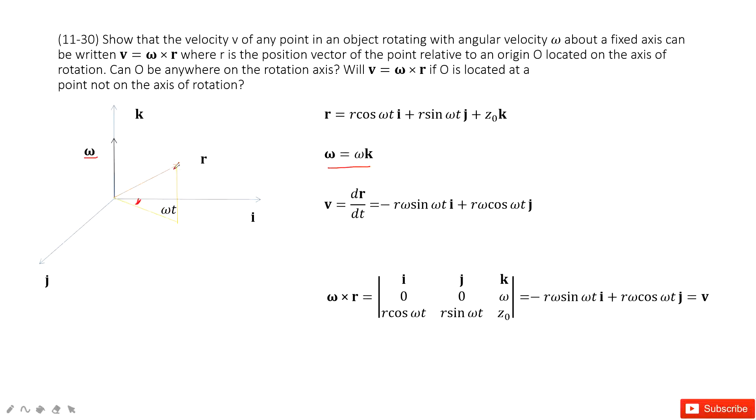Now we can project this R in the x and y plane. So the x component is just R cos(ωt). And at the y plane, R sin(ωt). And plus the z component, z₀ k.